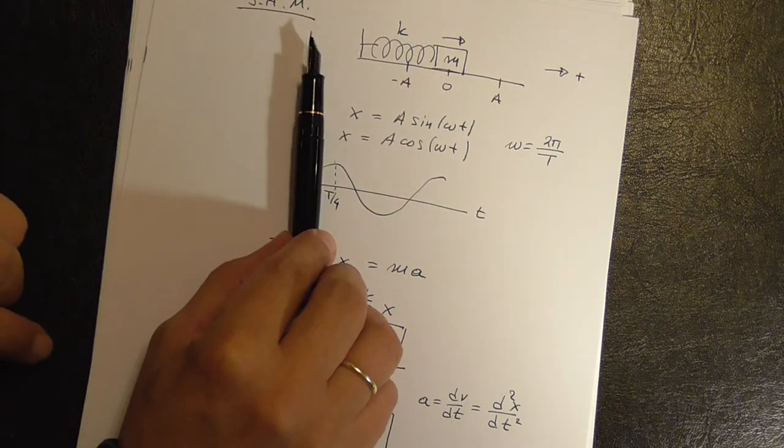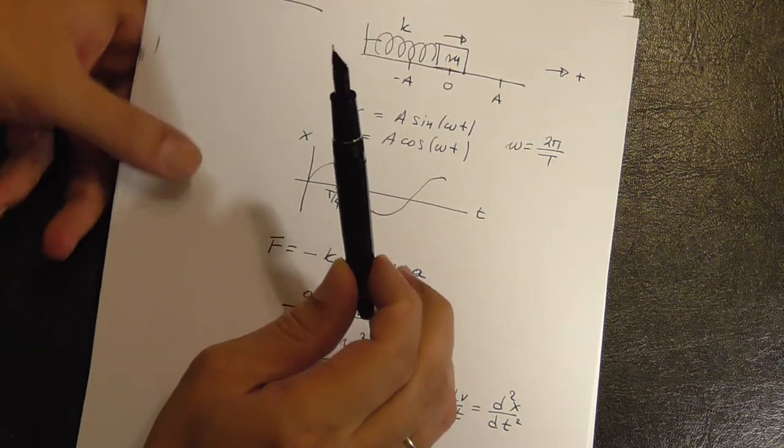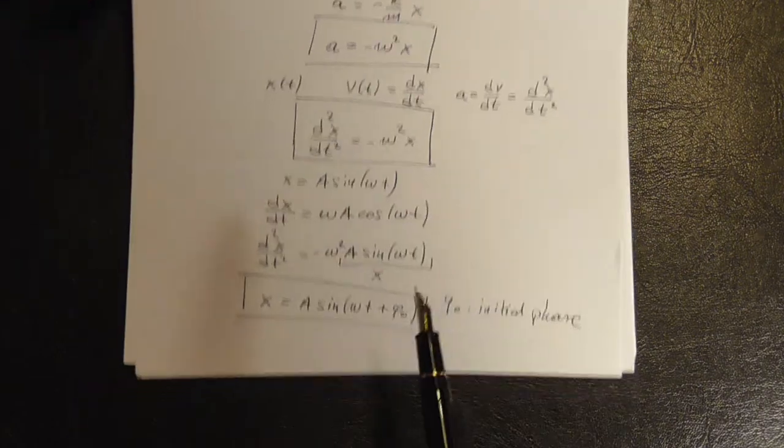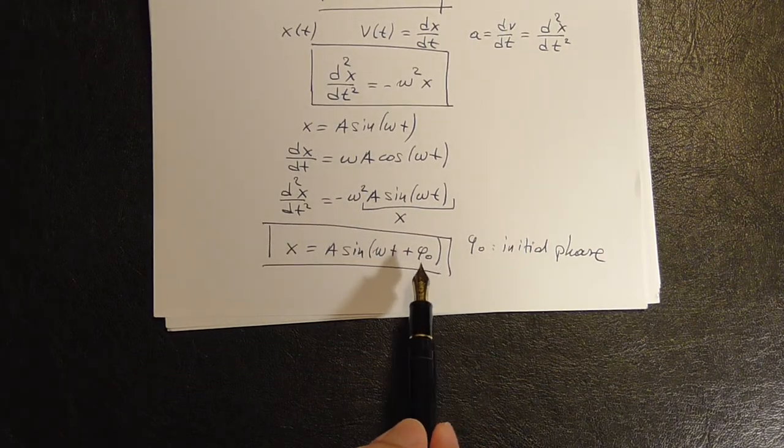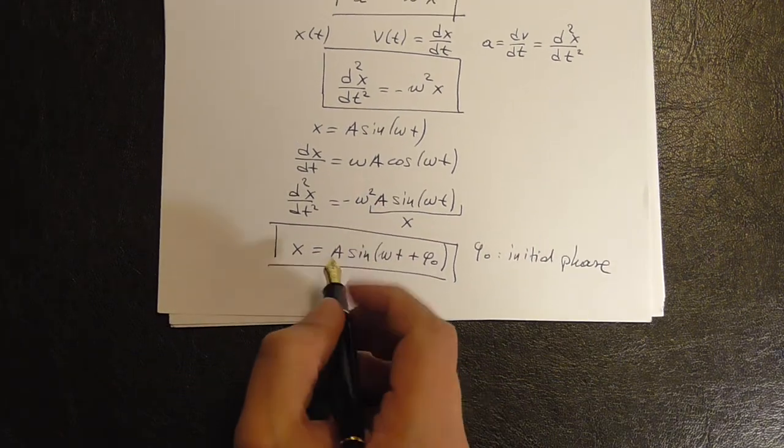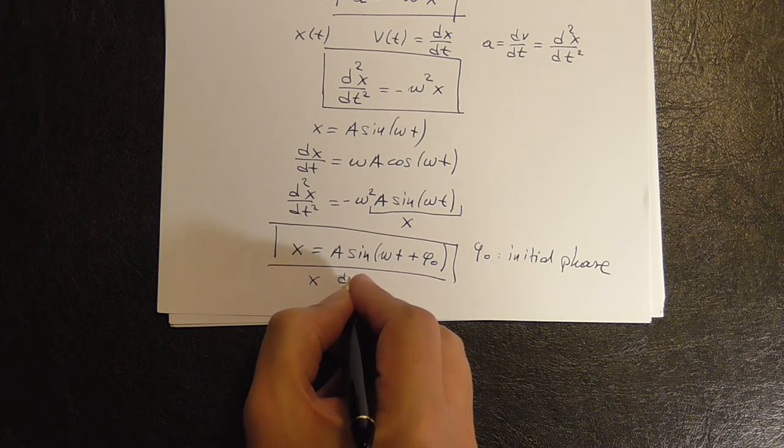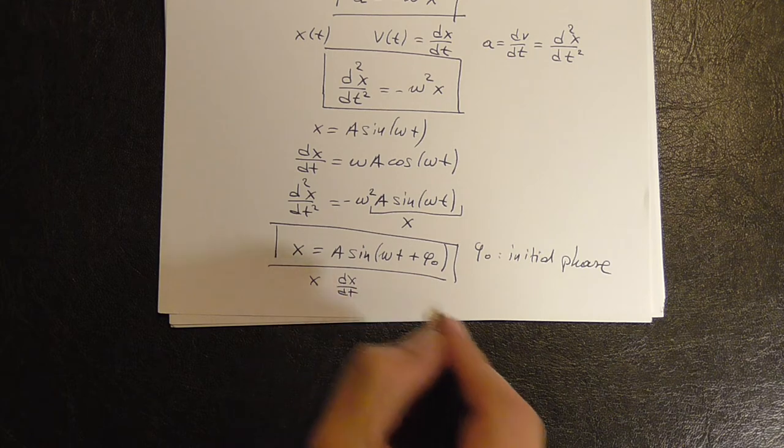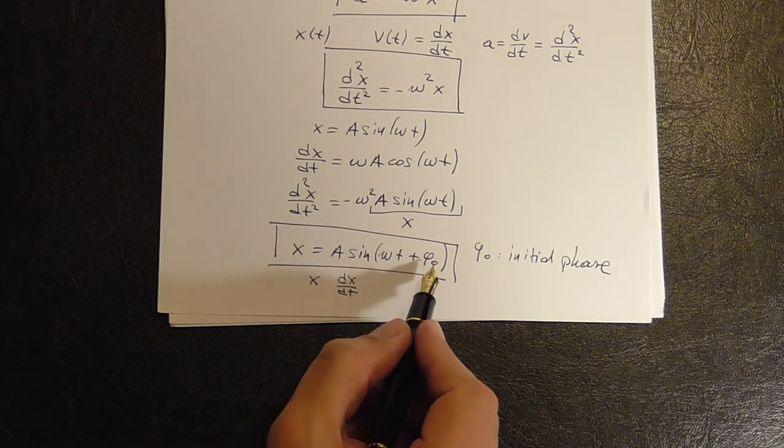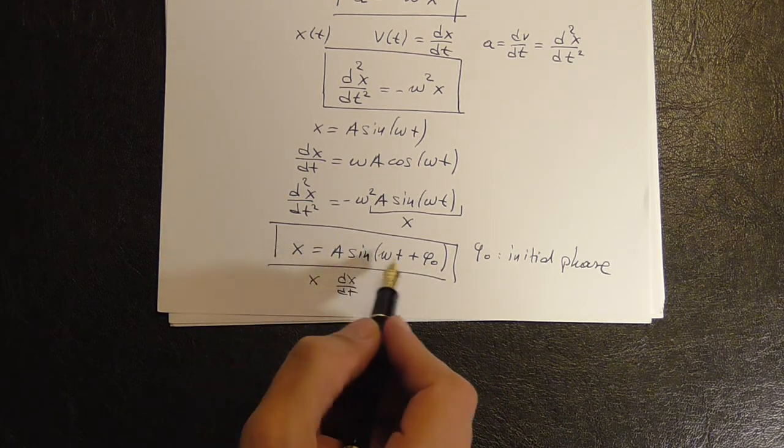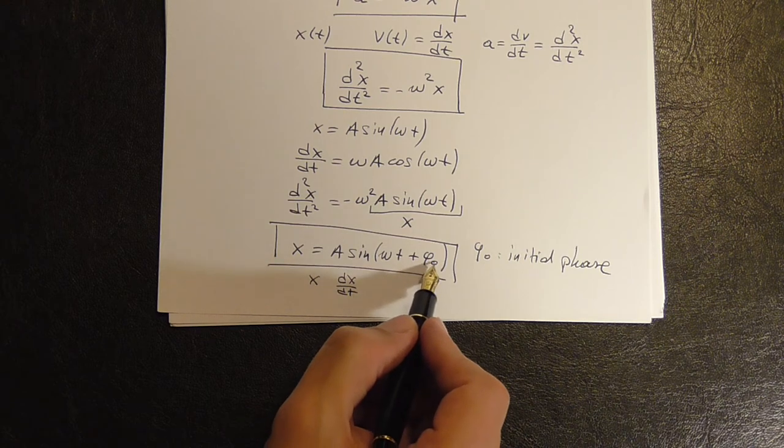90 degrees is actually a quarter of a cycle. So this corresponds to a quarter of the period and you get a cosine. Et cetera, et cetera. So this will give you not only these two cases, but any case, depending on the initial condition for X and V, which is dx/dt, then you know what the complete solution is, because you know what phi 0 is.